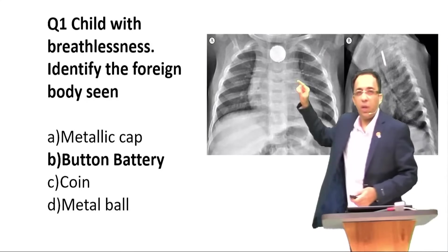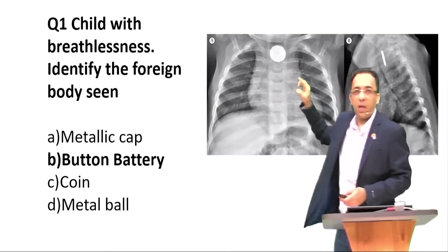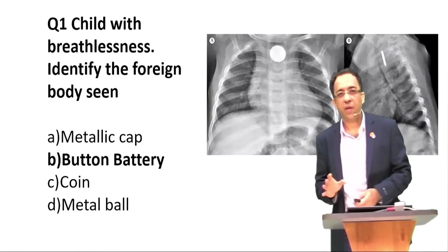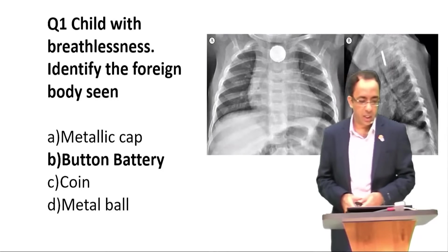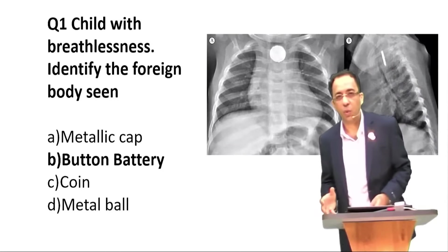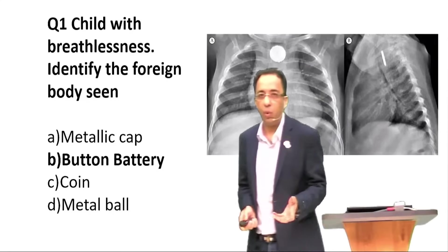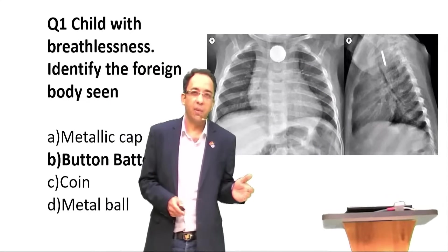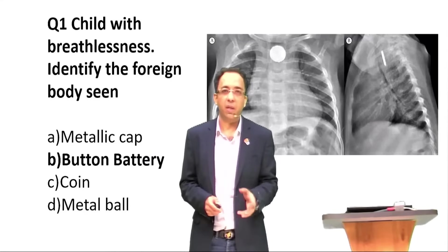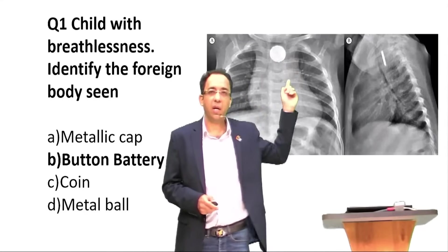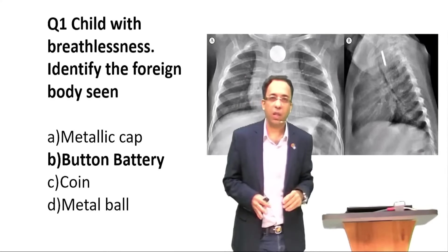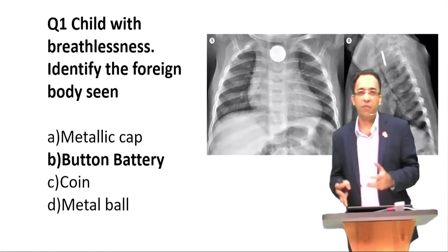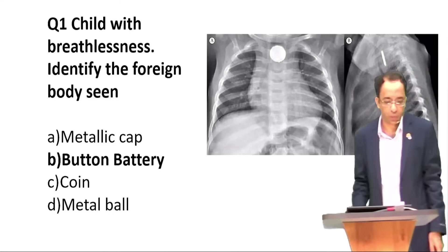The foreign body appears to have an inner ring and a slight bevel in the lateral view. Both of these findings point towards a button battery. We discussed this in our emergency room — I predicted that every time they ask a coin, next time they will ask button battery. This time they asked button battery, which has an inner ring and a beveled edge on the lateral view, is more caustic and corrosive, and has to be removed. The answer to the question was button battery.